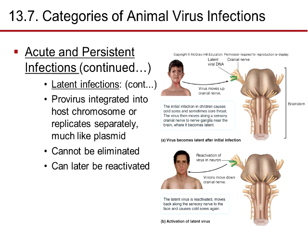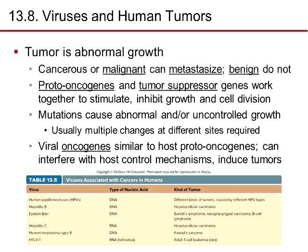Latent infections: the pro-virus integrates into the host chromosome or replicates separately, much like a plasmid. It cannot be eliminated and can be activated later. For example, a virus can move into a cranial nerve, affect the brain stem, reactivate in neurons, and move down the cranial nerves to cause disease.